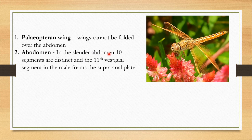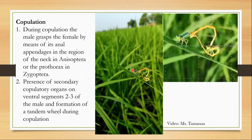The abdomen has 10 distinct segments and the 11th segment is vestigial. In the male, it forms a supraanal plate.